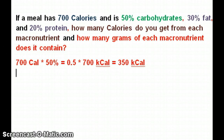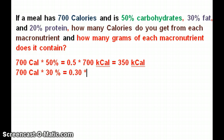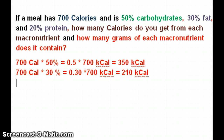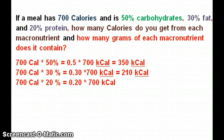Now for fats: 30% of 700 calories equals 0.3 times 700 kcal, which equals 210 kcal. And lastly, for protein: 700 kcal times 20% equals 0.20 times 700 kcal, and that equals 140 kcal.